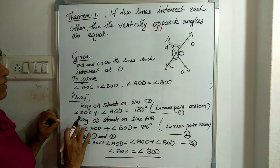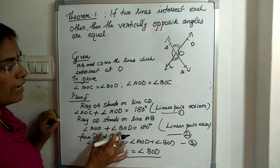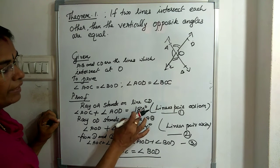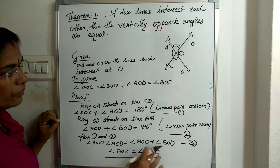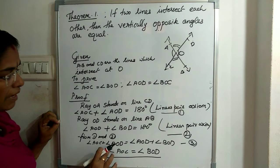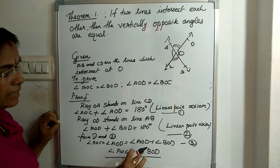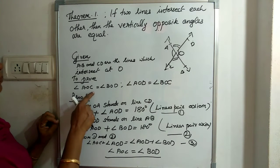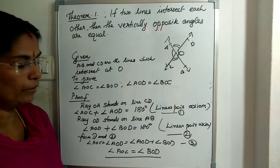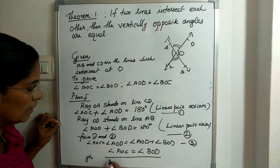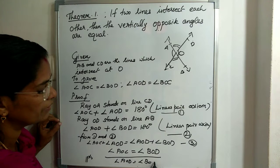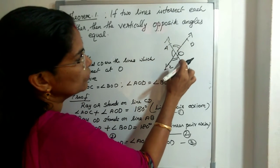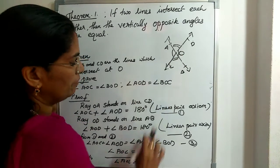From equations 1 and 2, we equate the left sides since both equal 180 degrees, and we mark this as equation 3. Since angle AOD appears on both sides, we cancel it. The balance is angle AOC on the left and angle BOD on the right, so angle AOC equals angle BOD. Similarly, we can prove angle AOD equals angle BOC by considering the other adjacent angle pairs. The second proof follows the same approach.